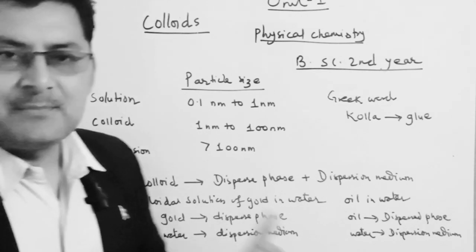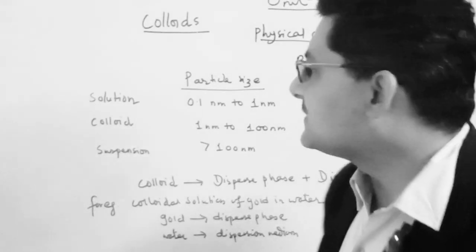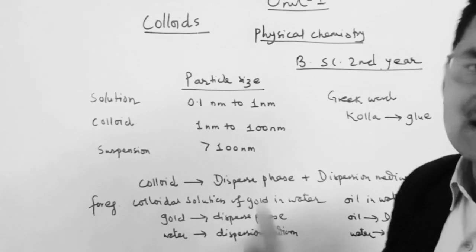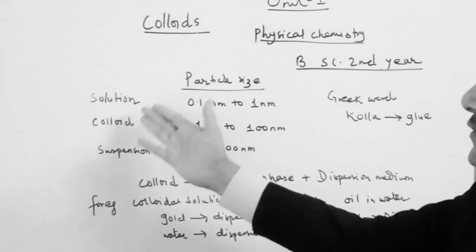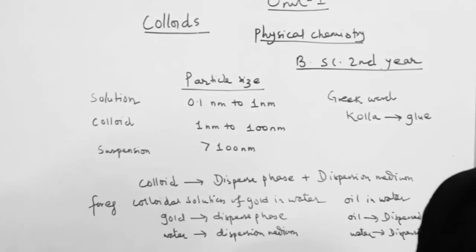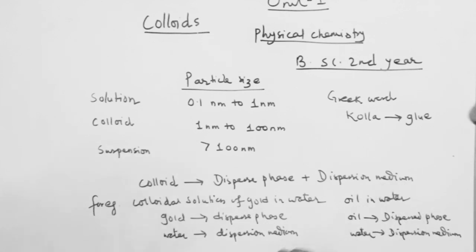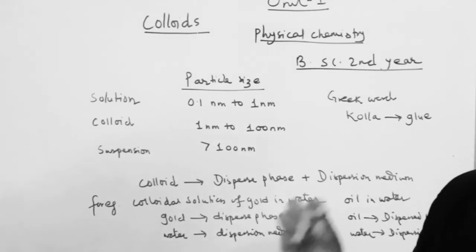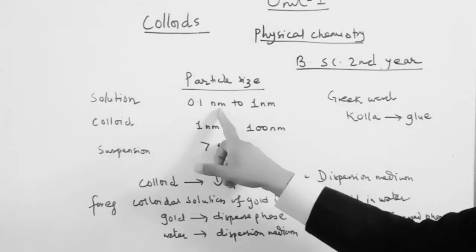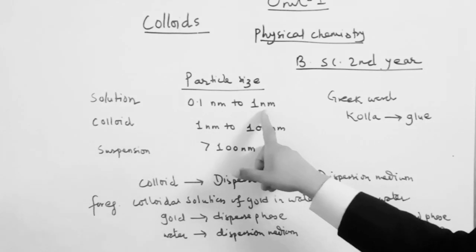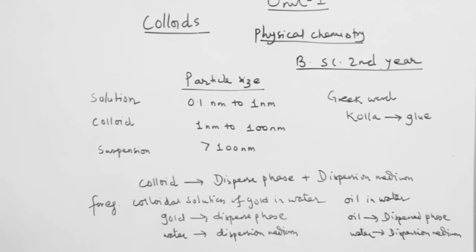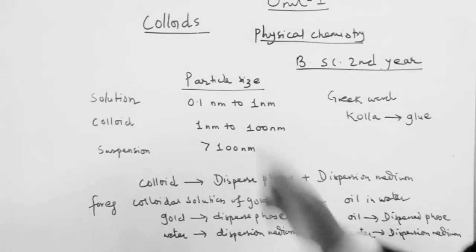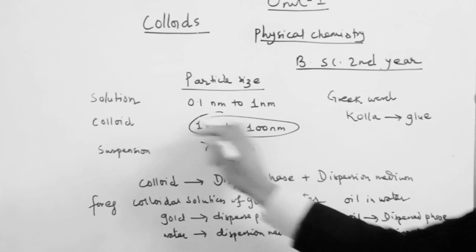Colloids are a type of solution. The solution is defined by particle size. The particle size for a true solution is 0.1 nm to 1 nm. We also have a particle size range of 1 nm to 100 nm.